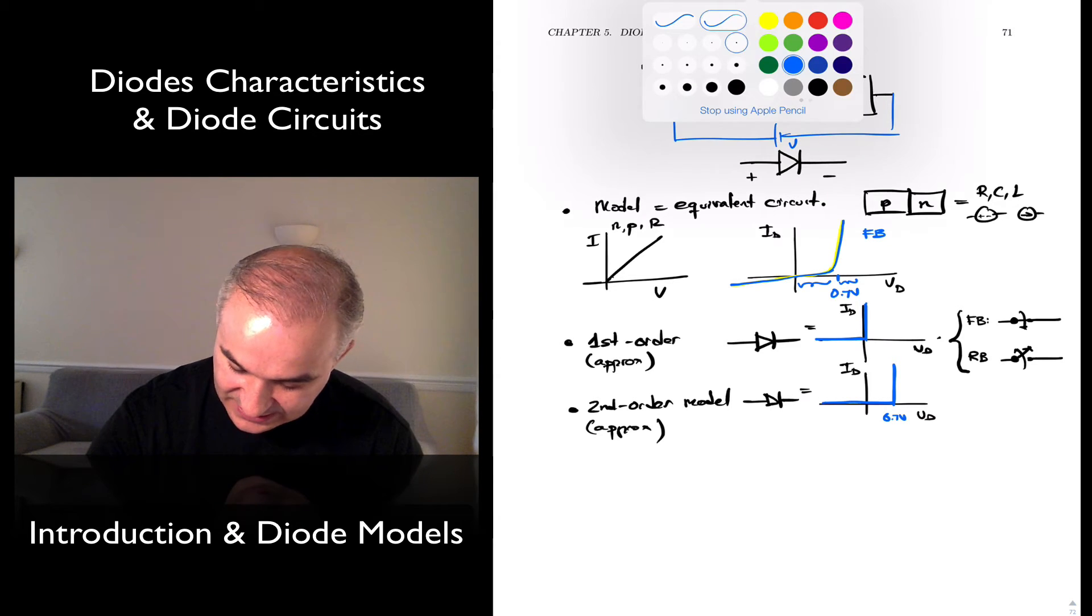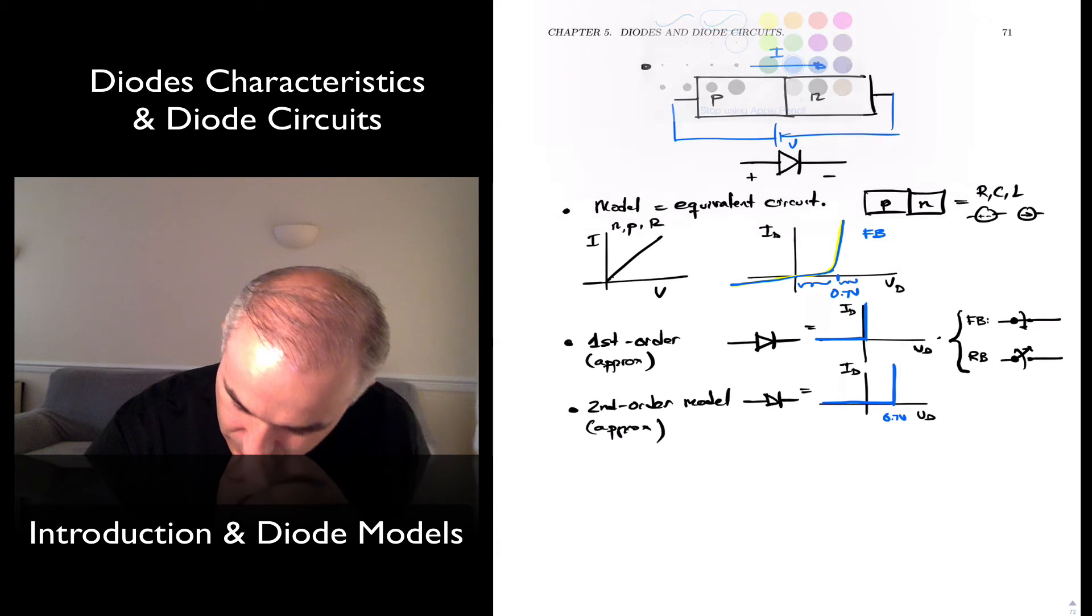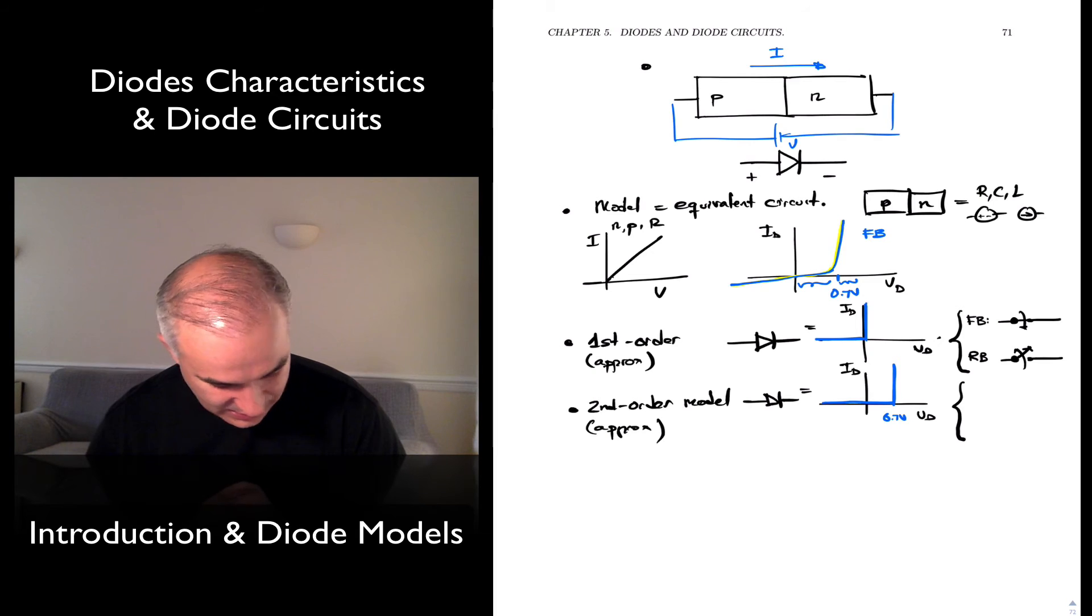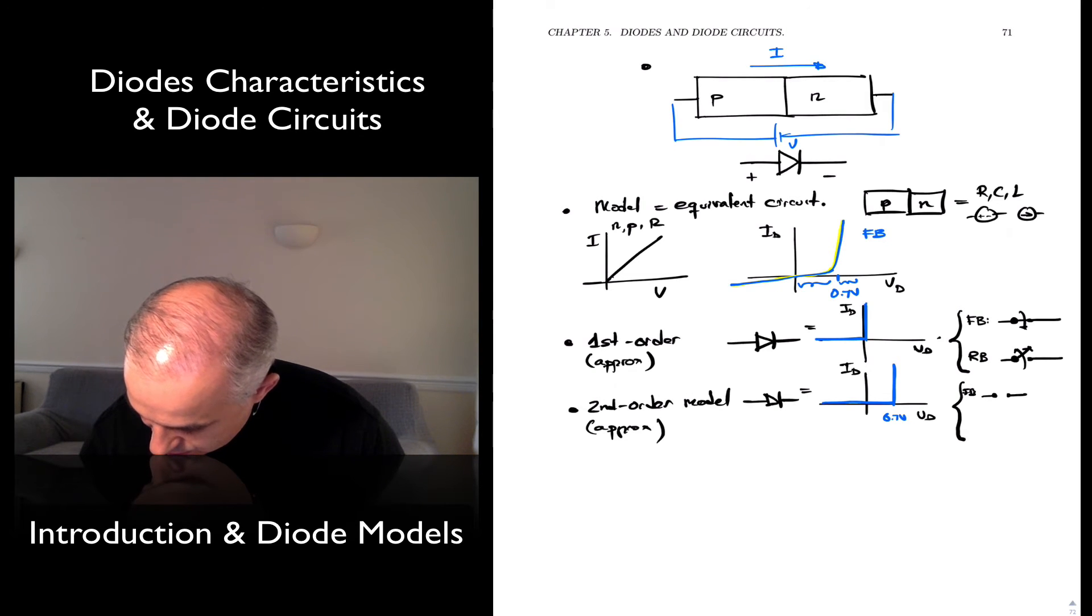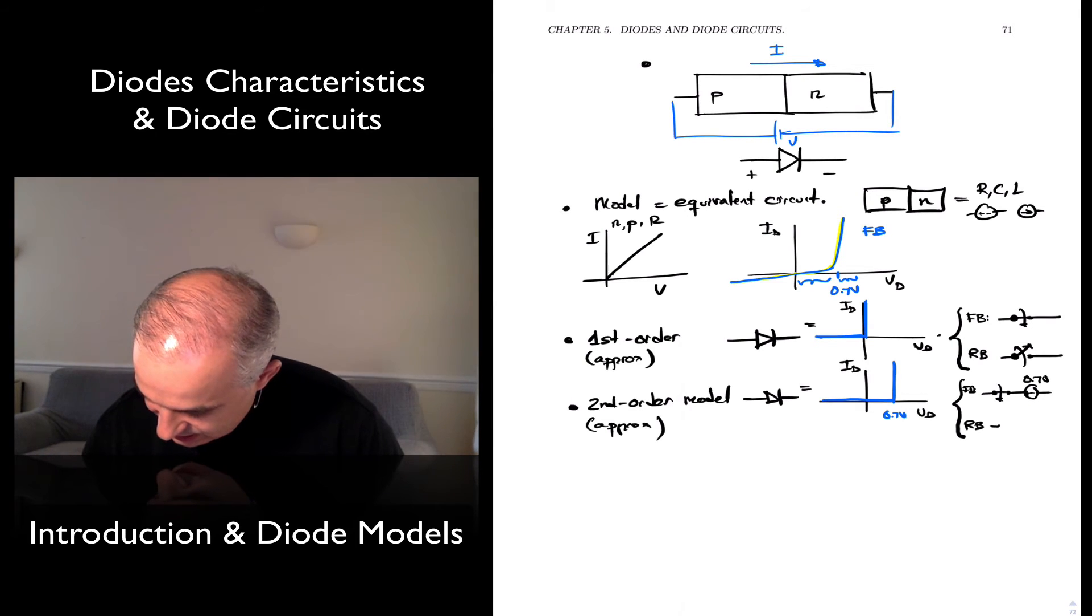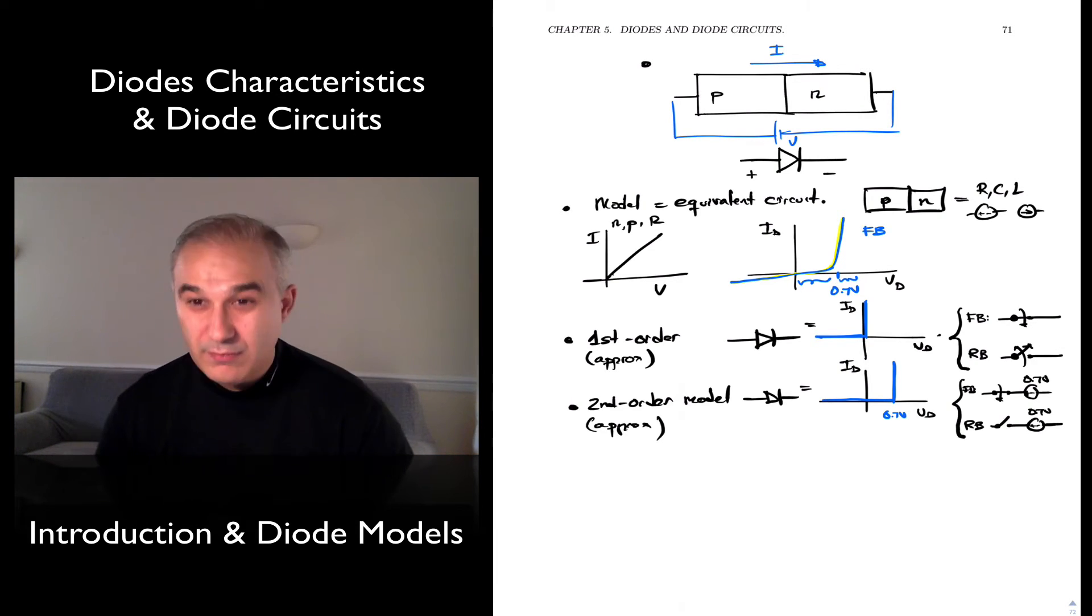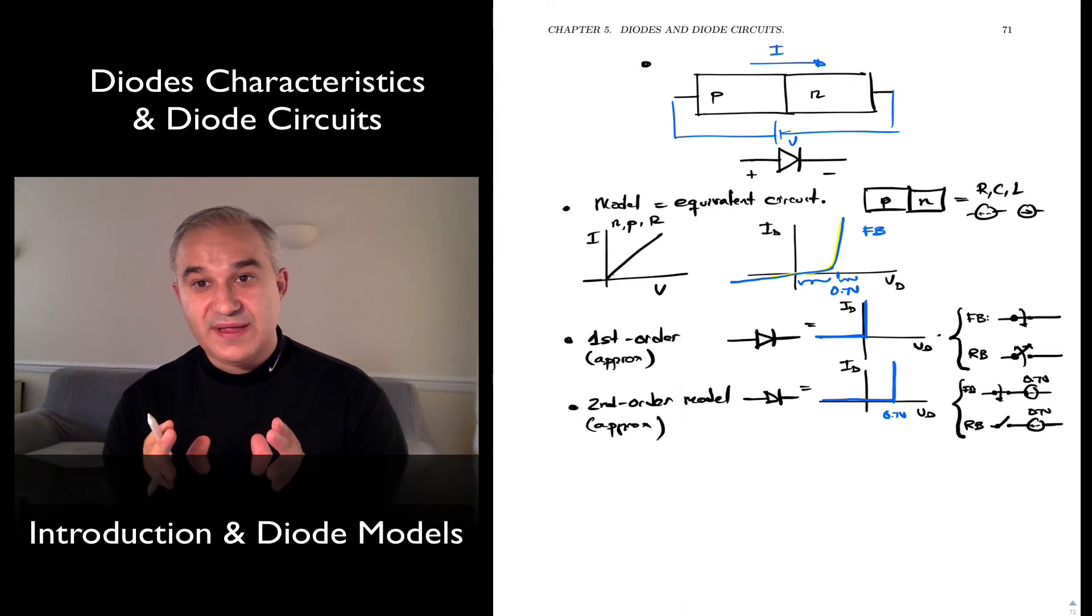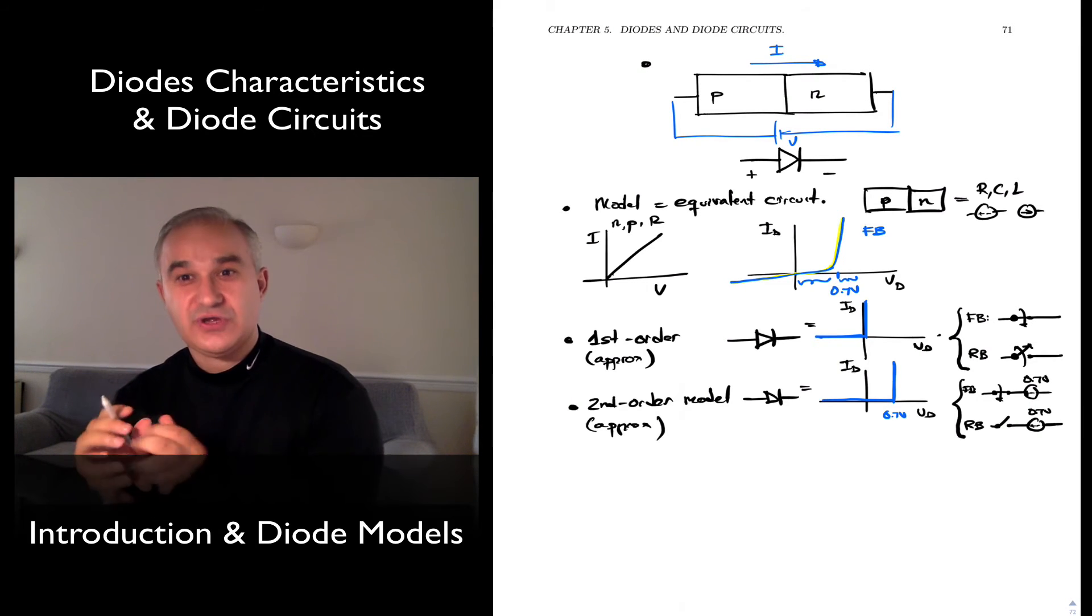So what would be the model in that case? What we have now is that in forward bias, I have my closed switch with a voltage source of 0.7 volts. And in the reverse bias, I have my open switch with that 0.7 volts.